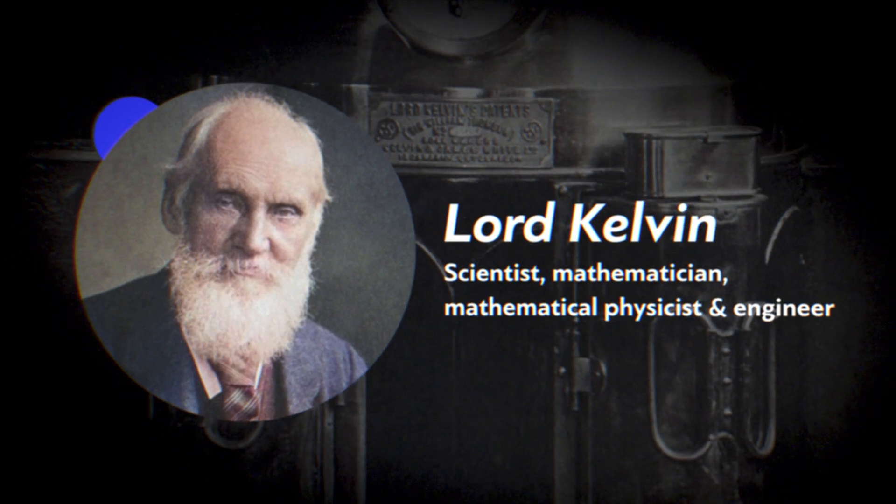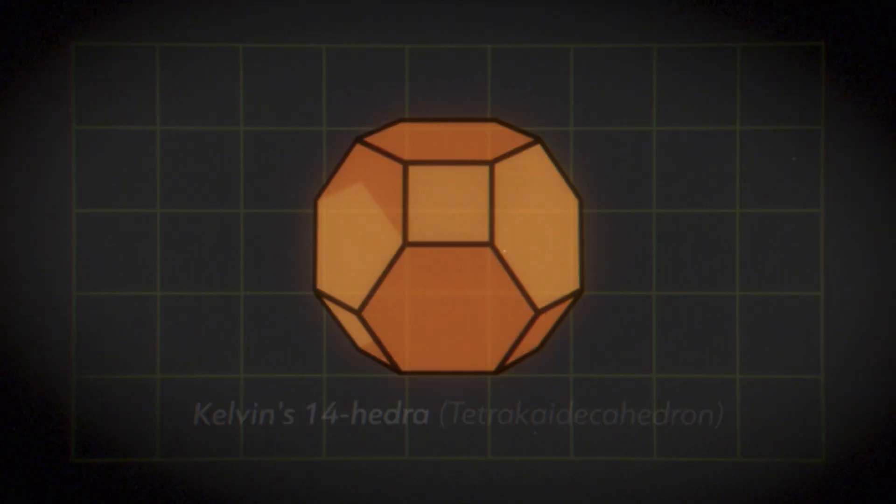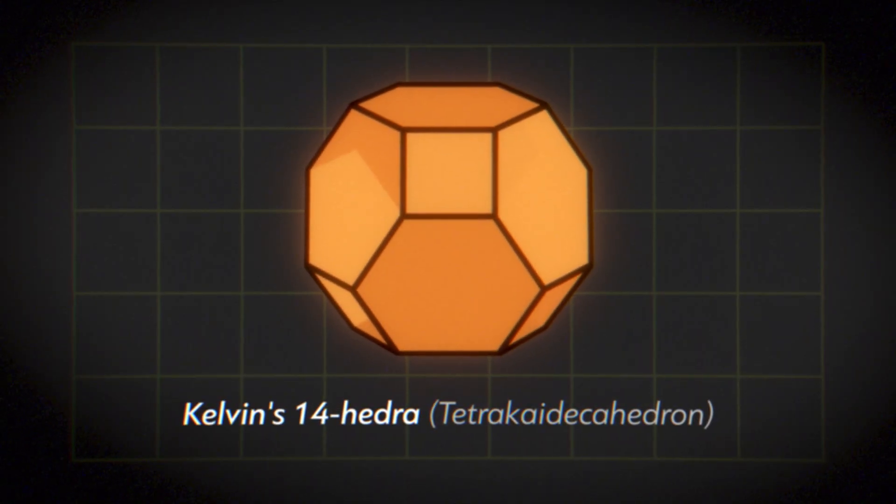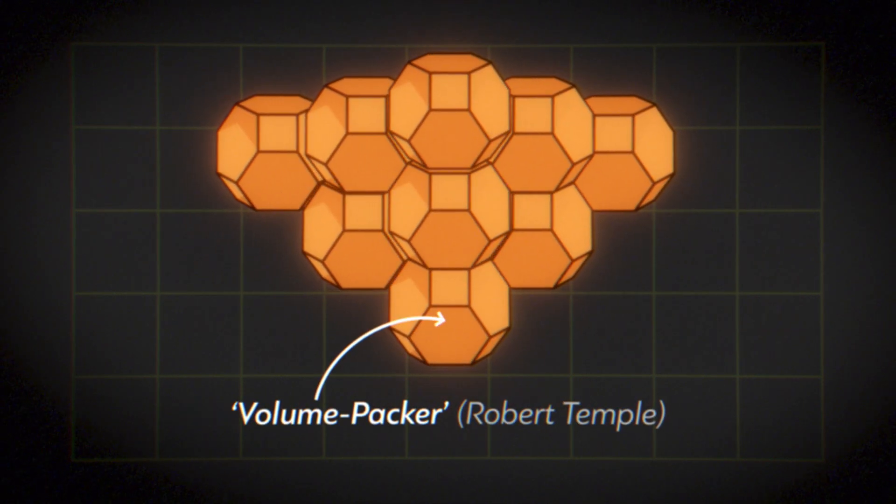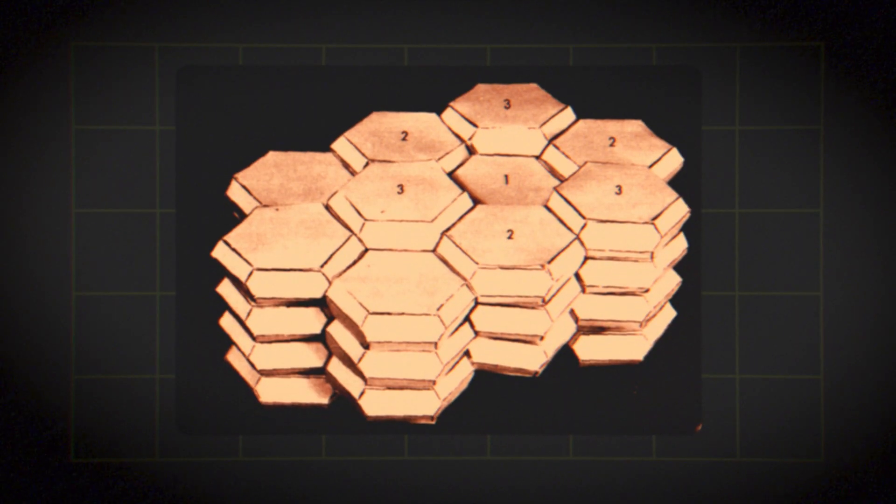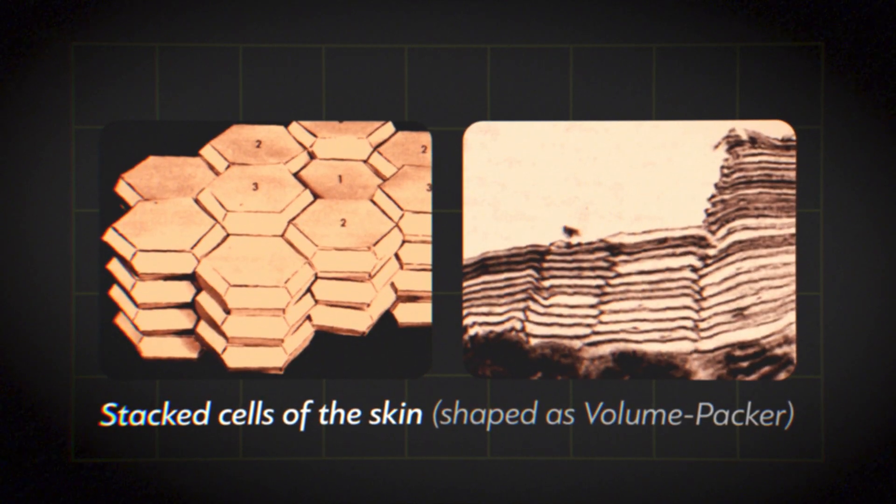He discovered a kind of three-dimensional hexagon, a structure made of 14-sided figures or volume packers, that can efficiently fill space with equally sized cells, surpassing the efficiency of other geometric shapes.